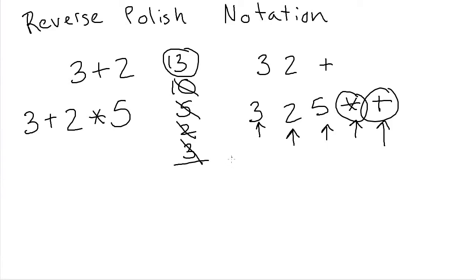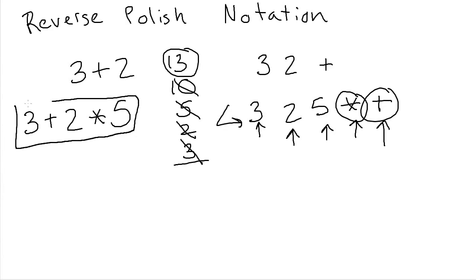The goal of Reverse Polish Notation is basically two things. One is to have it be easier for computers to evaluate expressions, because the algorithm for evaluating RPN expressions is much, much simpler than the algorithm for evaluating common infix notation. The other benefit is that it's in some ways simpler and less ambiguous for people — there are people who report that once you've used it for a while, it becomes really second nature and it's easier and less ambiguous to deal with.